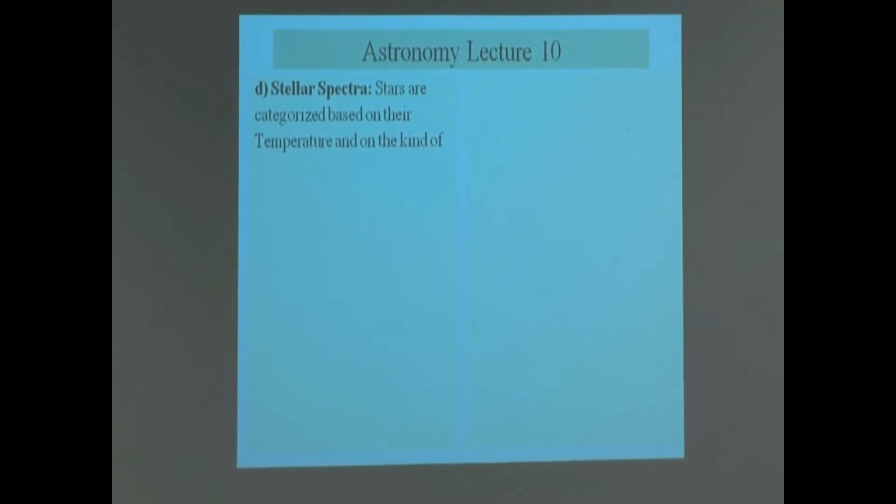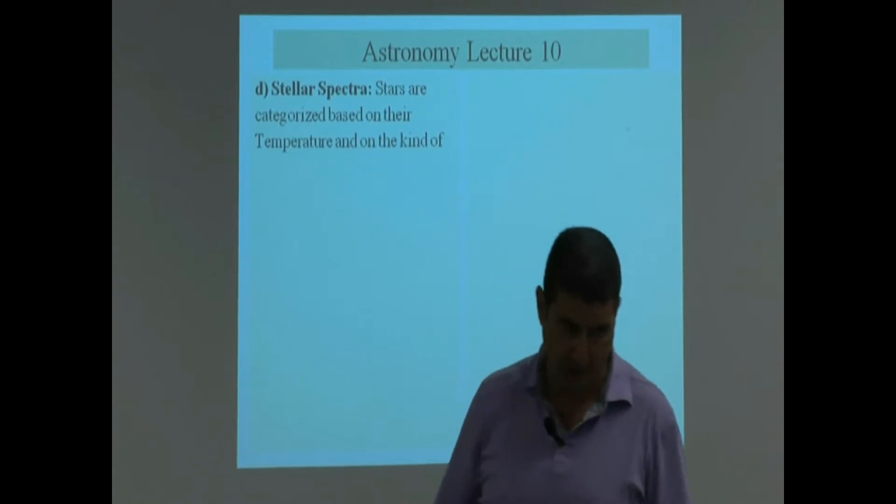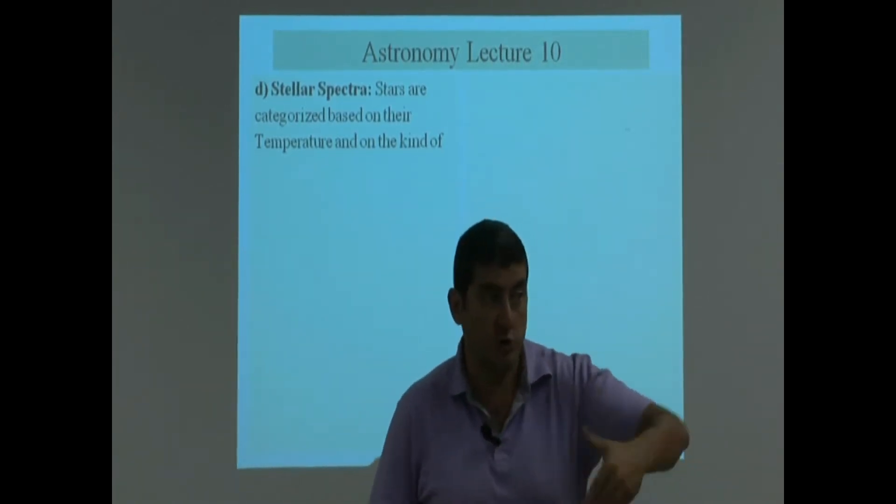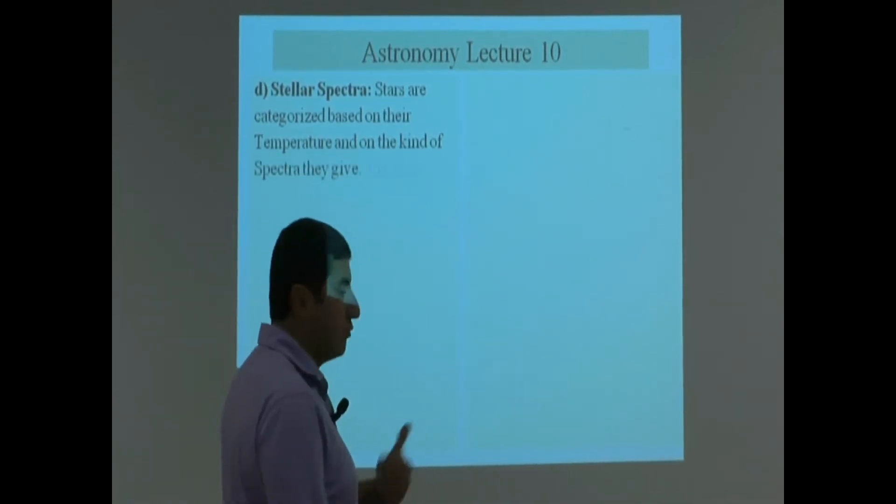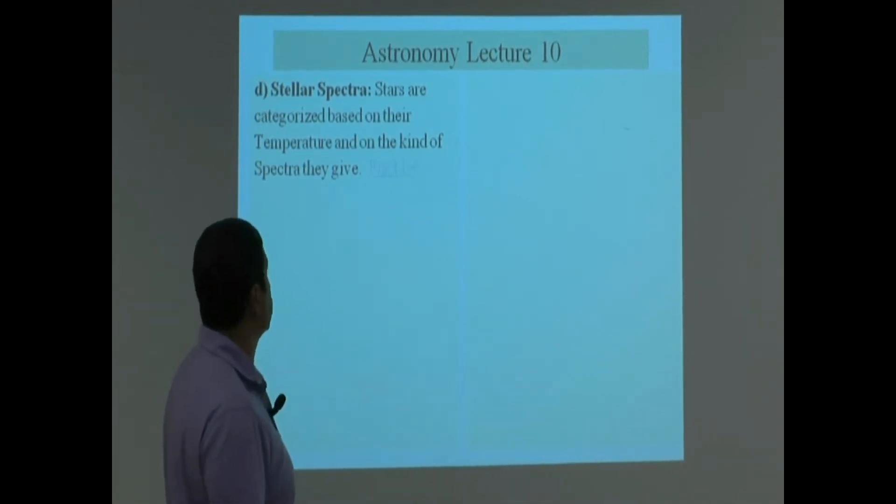Stars are categorized also by the kind of spectra that they give you. Now we've talked about in the past that stars give a spectra called absorption spectra, right? We didn't go into more detail into that. So now we go a little bit more into detail. Stars are categorized based on the temperature and on the kind of spectra that they give you.